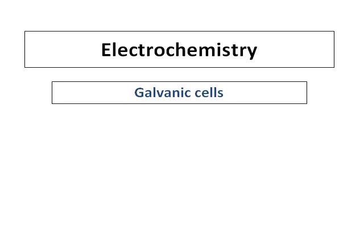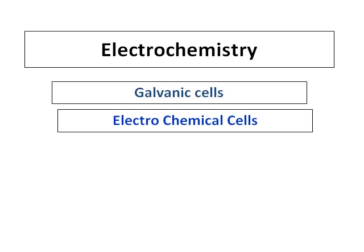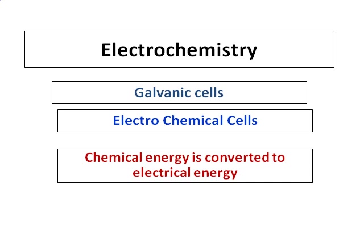In electrochemistry, we are going to learn about galvanic cells. Galvanic cells are also called electrochemical cells. Electrochemical cells convert chemical energy into electrical energy. Or I can say that electrical energy is produced as a result of a chemical reaction.